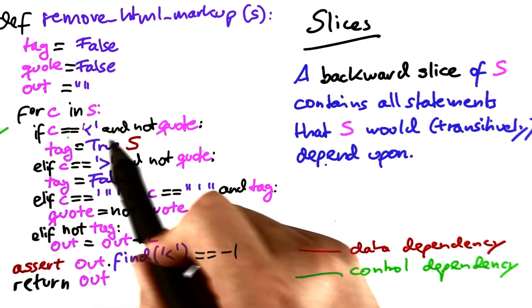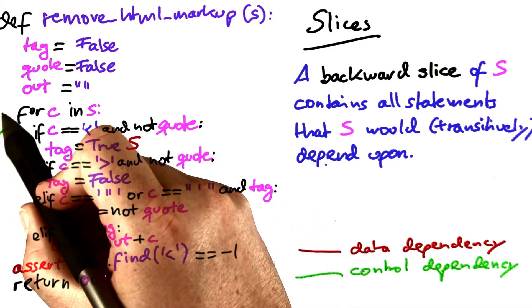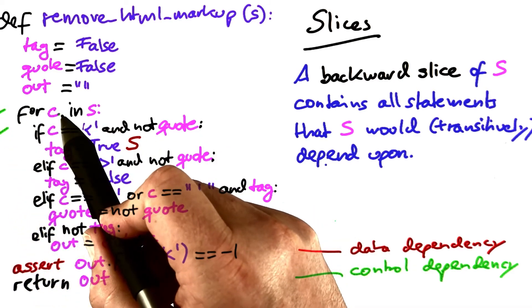However, this is control dependent on this if condition. This if condition, again, is dependent on the character c. So this is also part of the backward slice.